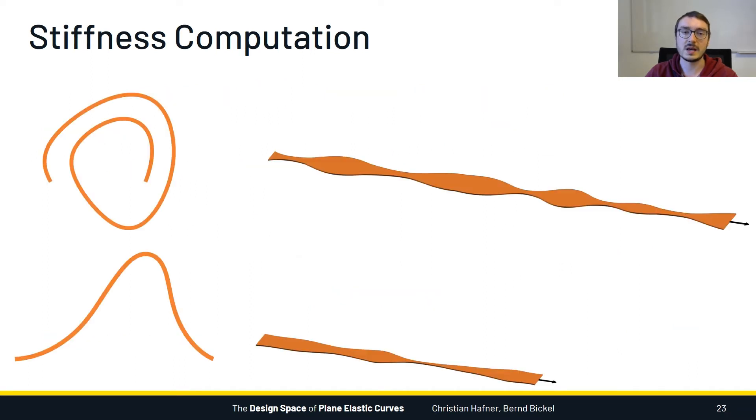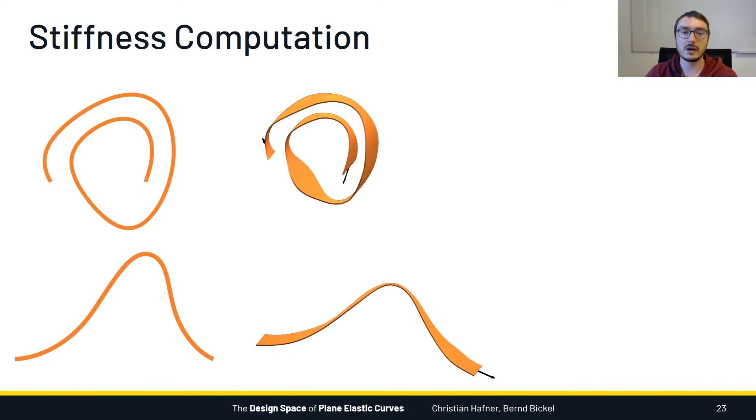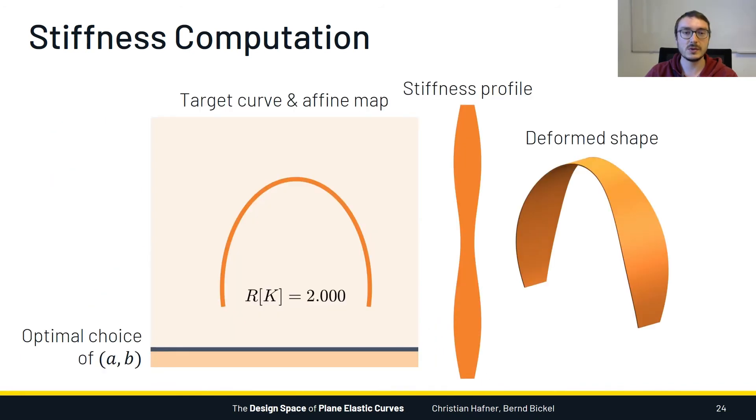Now let's look at a few examples. Here we have two target curves and the corresponding stiffness profiles that have been computed by the linear program. If we input these stiffness profiles into a forward simulator and apply boundary conditions, we exactly recover the target curves at equilibrium.